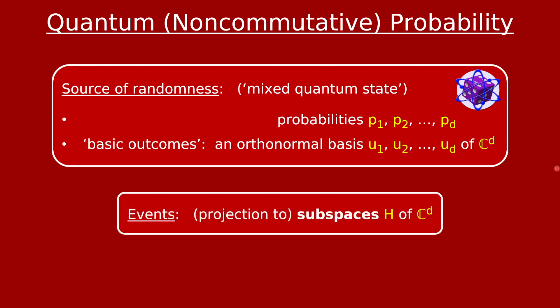So that's a quantum source of randomness — a quantum die. Now let's move on to quantum events. Classical events were subsets of the numbers 1 through d. But a quantum event is nothing more than a subspace h of d-dimensional space, or equivalently the action of projecting onto that subspace. Here you can see where the terminology non-commutative comes in: if you take a vector and project it onto subspace h1 and then onto h2, it's not the same as projecting first onto h2 and then onto h1. This is the non-commutative nature of quantum events, and it's inherent in things like the uncertainty principle.